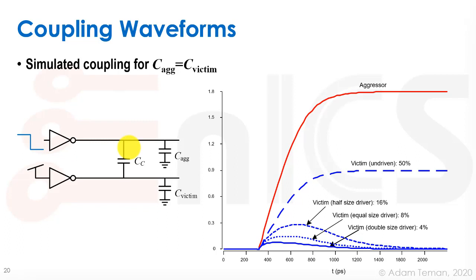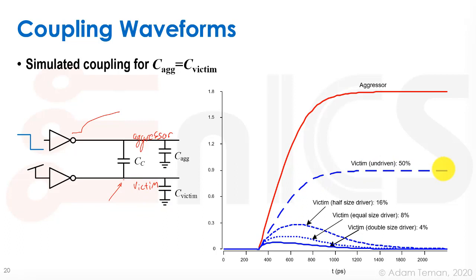Taking a setup with a driver (aggressor) causing a transition that, via coupling capacitance, affects another wire (victim): if the victim is undriven and the coupling capacitance equals the victim's capacitance to ground, we get a 50% rise that just stays. But if there is a driver holding the victim to ground, the noise depends on driver size. A half-size driver produces a large jump before discharging back to ground; a double-size driver produces a small jump. The bottom line: to reduce noise, we should drive coupled wires with a large enough driver.